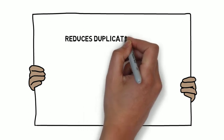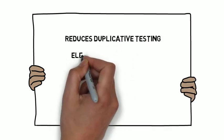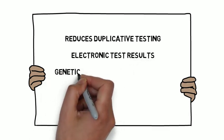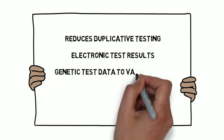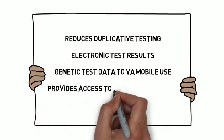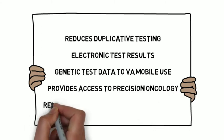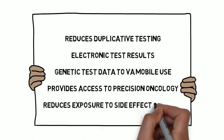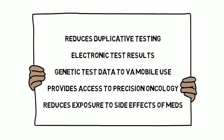Overall, the genetic diagnostic testing system reduces duplicative testing, provides access to structured electronic test results, provides access to genetic test data to VA Mobile for use in telehealth consultation, provides access to genetic test data to the Precision Oncology Program, including IBM's Watson and Department of Energy Systems, and reduces exposure to potentially toxic side effects of medications that are unlikely to have therapeutic benefits for a veteran.